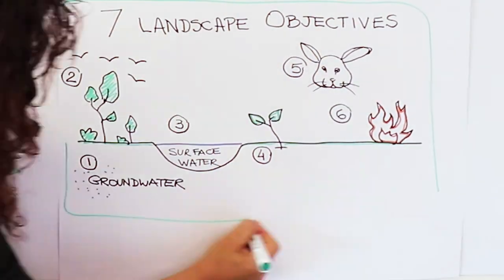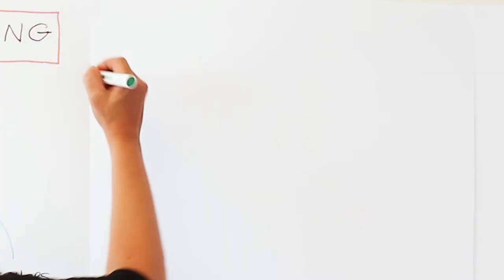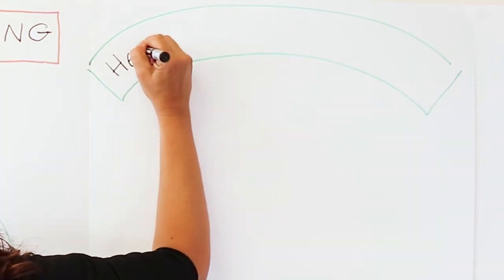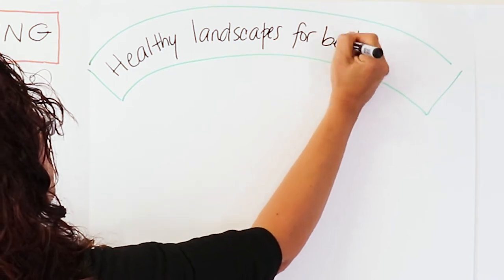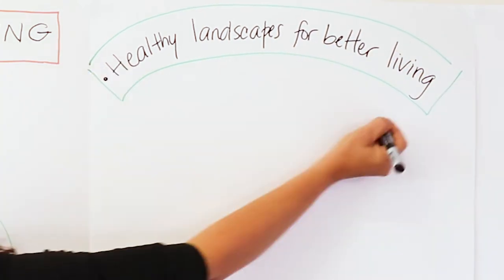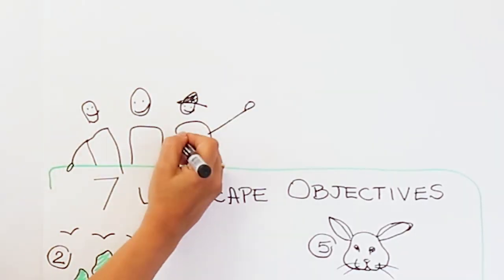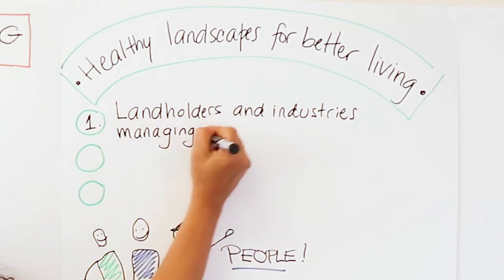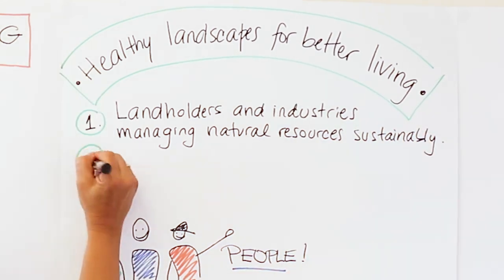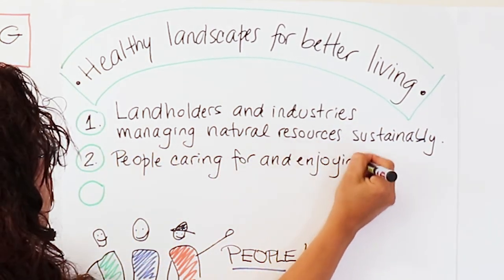But none of this can be done without people and the regional NRM plan contains a vision that we need healthy landscapes for better living. And we've got three goals that sit under this vision about involving people. They are that landholders and industries use natural resources sustainably, we want people caring for and enjoying nature, and communities living sustainably.